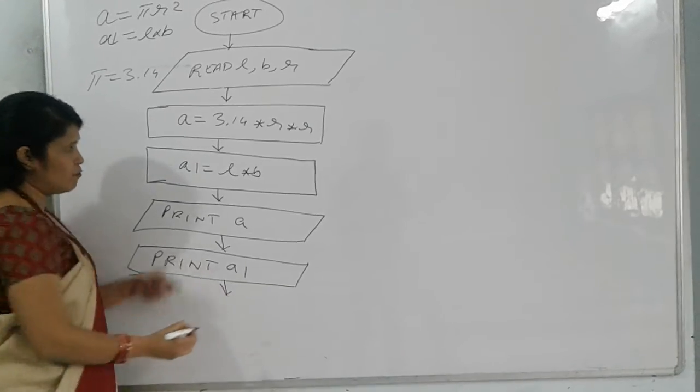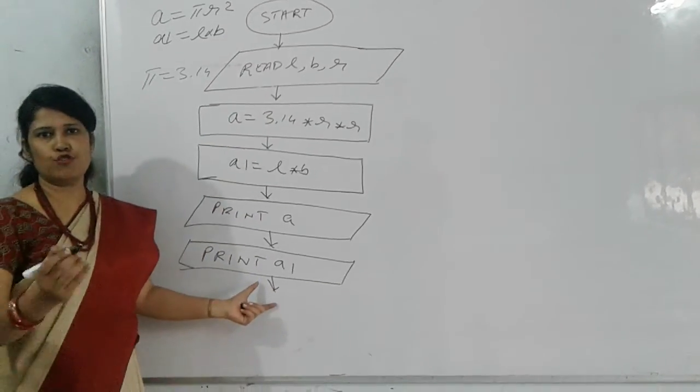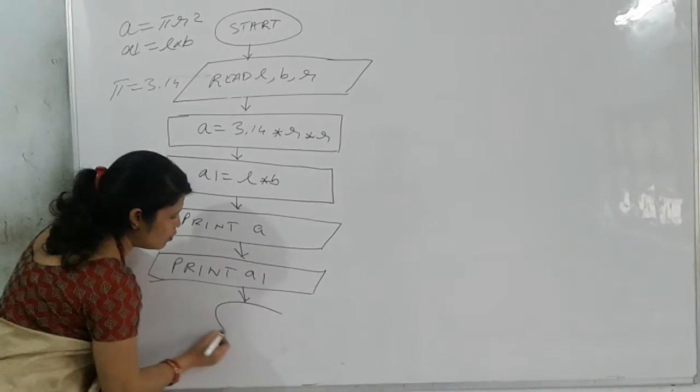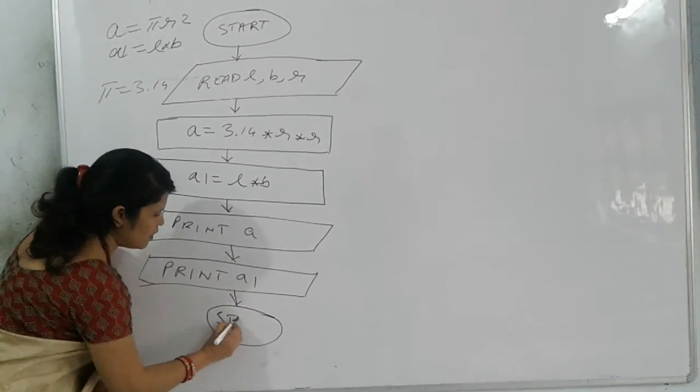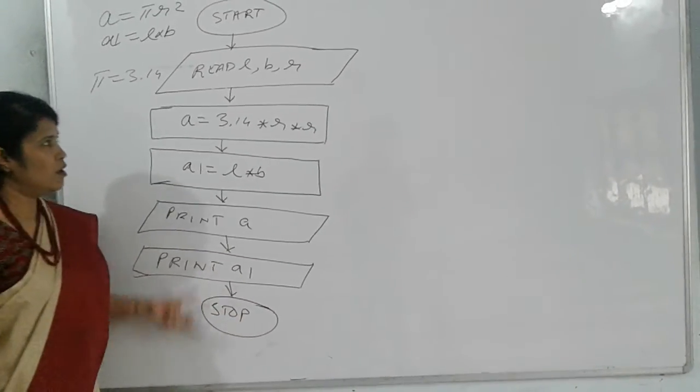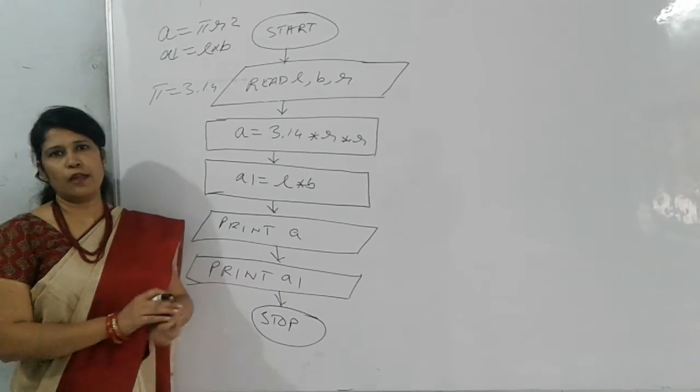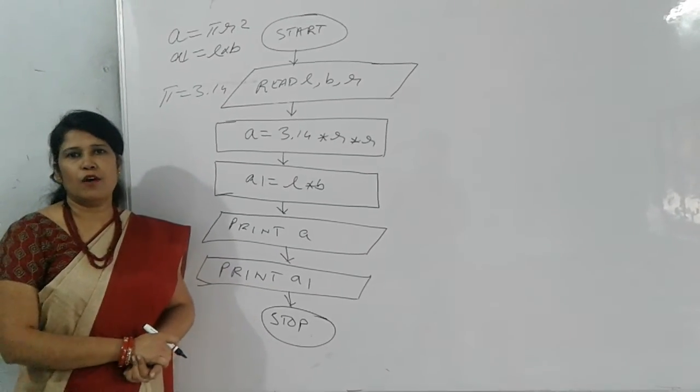And always our flowchart starts with a start box, ends with a stop box. So we will write stop over here. So this is a flowchart for calculating area of a circle and area of a rectangle.